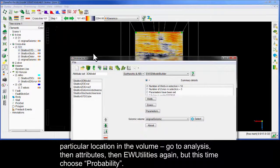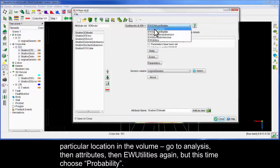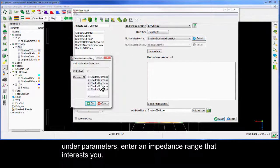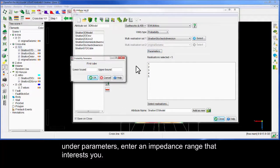Go to Analysis, then Attributes, then E-double Utilities again, but this time choose Probability under Parameters. Enter an impedance range that interests you.